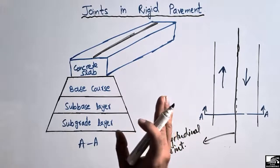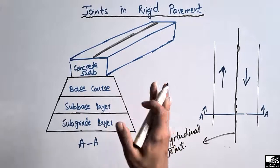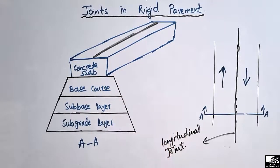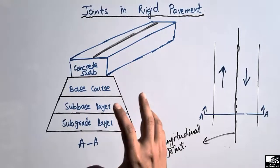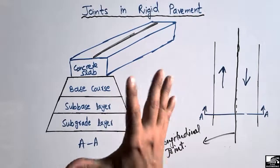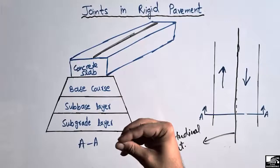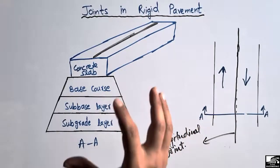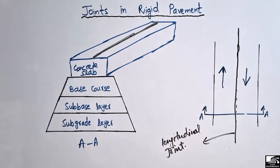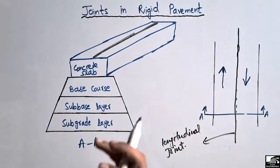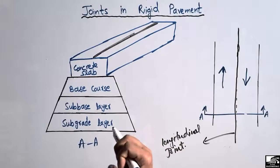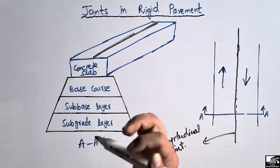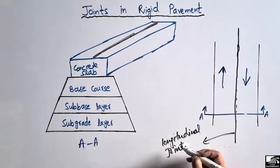The main purpose of the longitudinal joint is to avoid thermal stresses, because during temperature change there will be variation in the concrete slab. In summer the concrete slab will try to expand, so the longitudinal joint helps to avoid that expansion. Similarly, in winter the concrete will try to contract, and these joints help resist that contraction during the winter season.